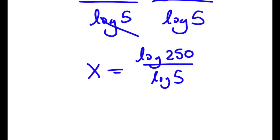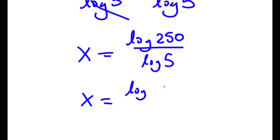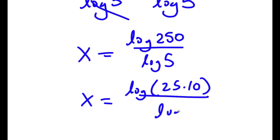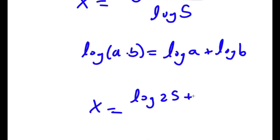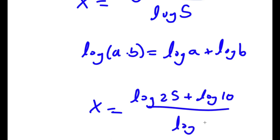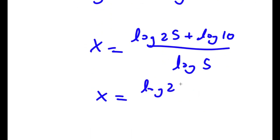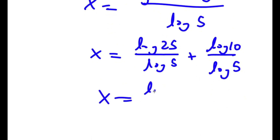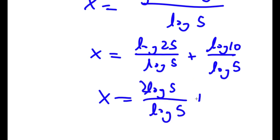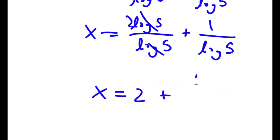Now log of 250 I can rewrite as log of 25 times 10. Using the rule log a times b equals log a plus log b, that's log 25 plus log 10 over log 5. This equals log 25 over log 5 plus log 10 over log 5. And log 25 is log of 5 squared, so I can move the exponent to the front: 2 log 5 over log 5 plus log 10 over log 5. These two cancel out, and I get x is equal to 2 plus 1 over log 5.